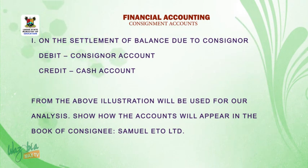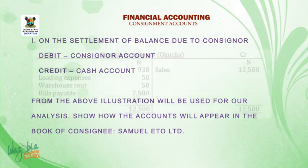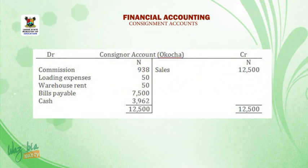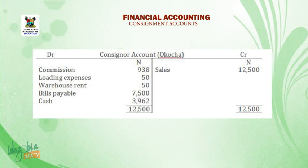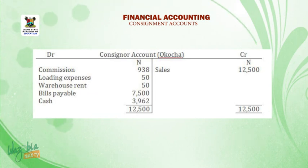From the above illustration, show how the account will appear in the book of the consignee — Samuel Eto'o Ltd. The consignor account in the book of the consignee: debit side — commission 938 Naira; landing expenses 50 Naira; warehouse rent 50 Naira; bills payable 7,500 Naira; cash balance 3,962 Naira. Credit side — sales 12,500 Naira. Thank you for listening.